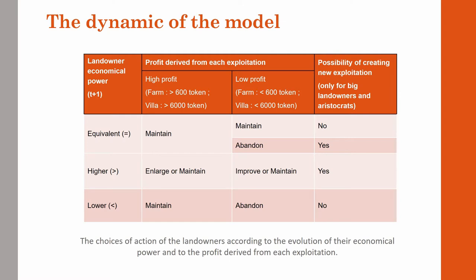At each iteration, the landowner's decision-making regarding each exploitation depends on the combination of the evolution of his economic power — which can be equivalent, higher, or lower than his revenue at the previous iteration — and the profit derived from his exploitation. In the simplest case, when the landowner's revenue is lower than his previous one and the profit from his exploitation is high, he will maintain it without change. Whereas if the profit from the exploitation is low, he will abandon it, but only after 5 consecutive years of low profit.